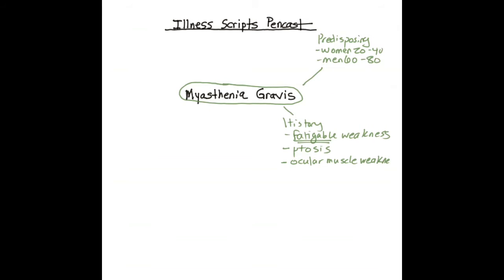These manifestations will include ptosis and/or diplopia. Other muscle groups that may be involved include the bulbar and proximal limb muscles. The most dreaded muscle group involved in myasthenia is the respiratory muscles, as this can lead to respiratory failure and death.